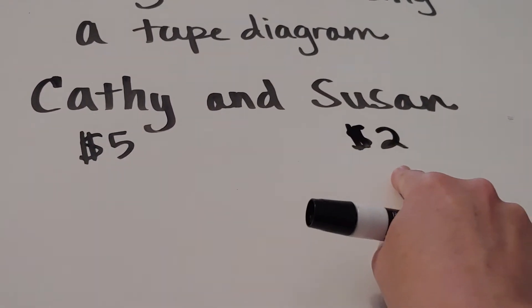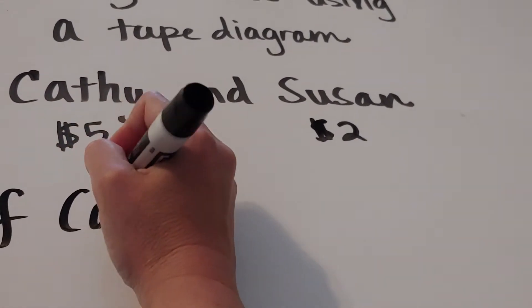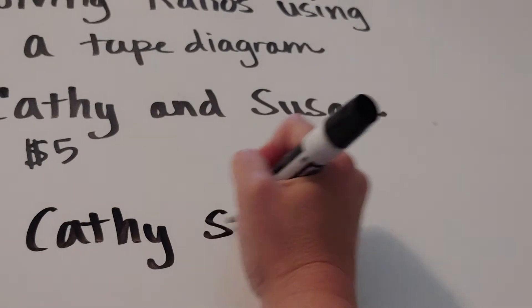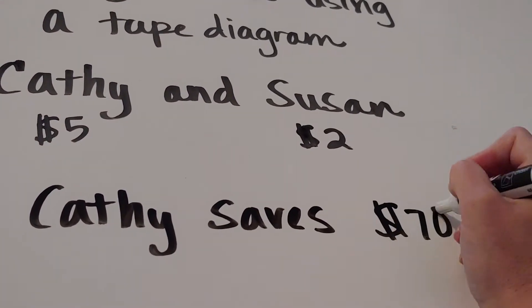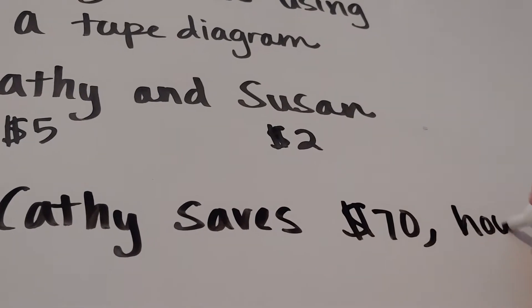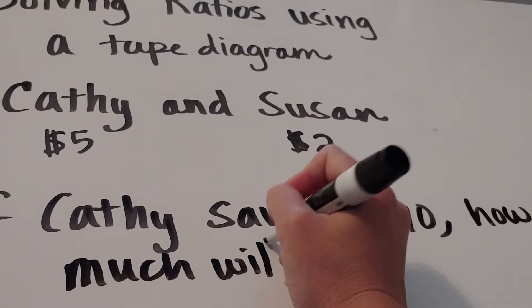So the idea here is we could ask: if Kathy saves seventy dollars, how much will Susan save?